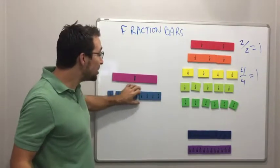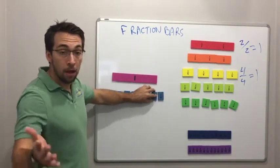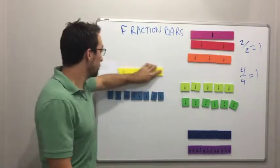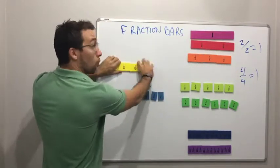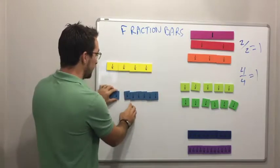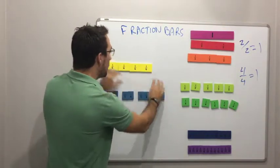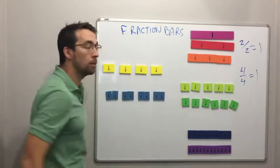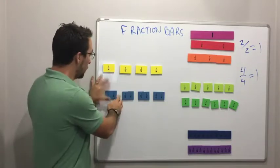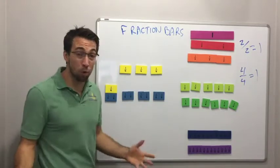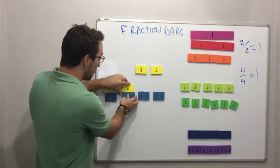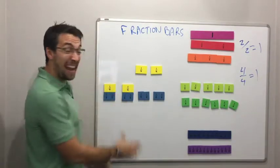This is really, really cool. Check this out. Using fraction bars. So here we're dealing with fourths, right? Fourths and eighths. How much does two eighths equal? Look, one, two. Two eighths equals a fourth. Two eighths equals a fourth. Two eighths. It gets even cooler.